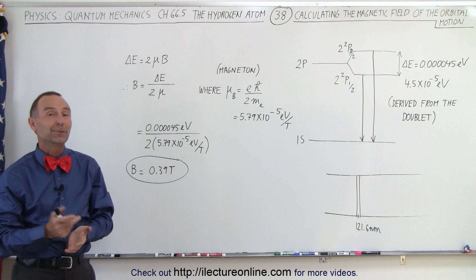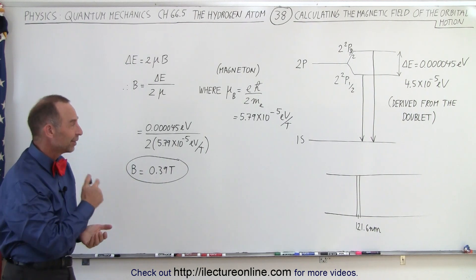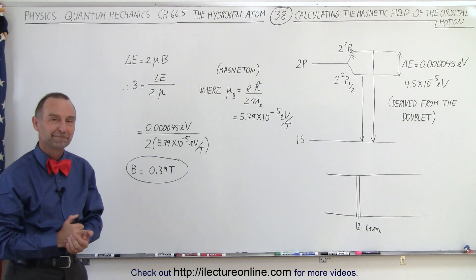And that's how we figured out the magnetic field caused by the orbital motion of an electron. Thank you.